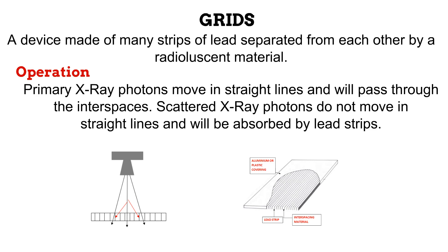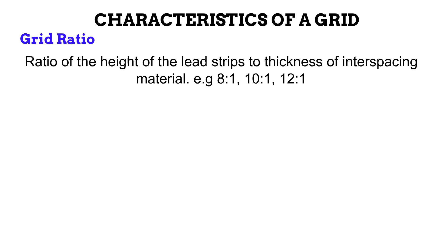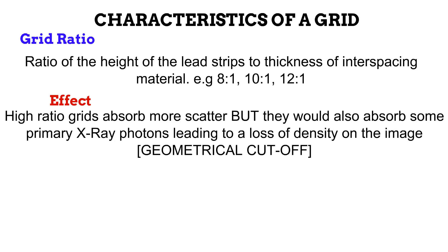Grids have certain characteristics that determine how they function. The first is the grid ratio — the ratio of the height of the lead strips to the thickness of the interspacing material. Note that the height of the lead strips refers to its thickness. You'd find grid ratios such as 8:1, 10:1, and 12:1. The higher the grid ratio, the more scatter is absorbed, because a high grid ratio means thicker lead strips, which absorb more scatter than thin ones.